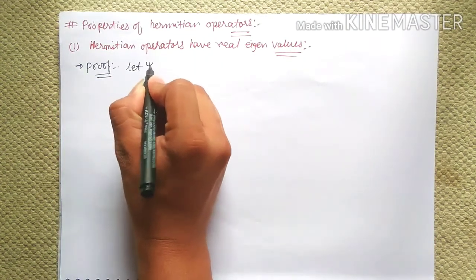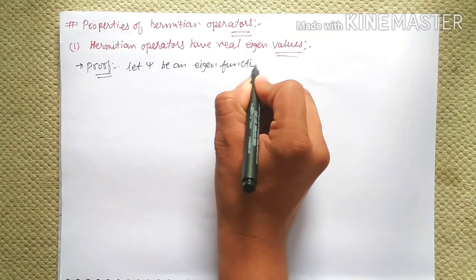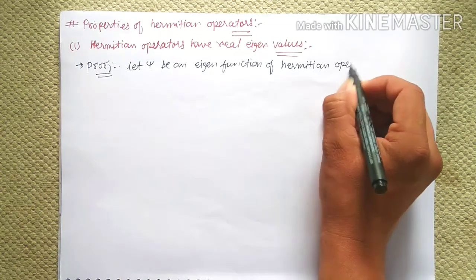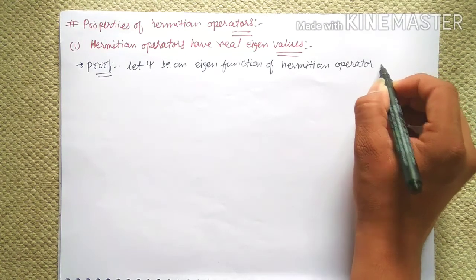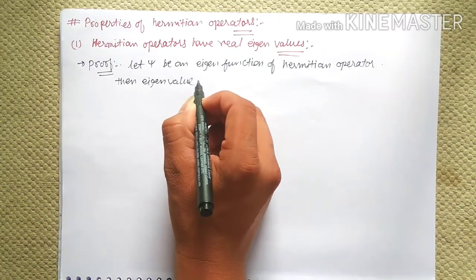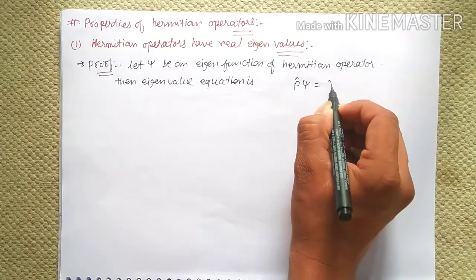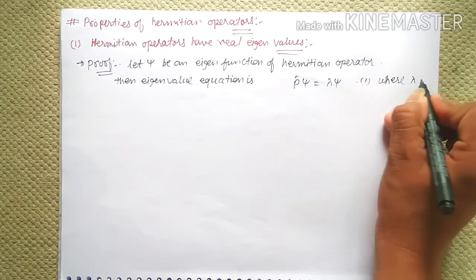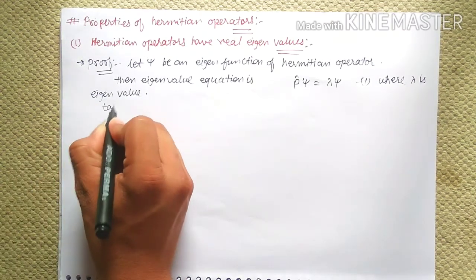Proof: Let psi be an eigenfunction of a Hermitian operator. Then the eigenvalue equation is P-hat psi equals lambda psi, equation one, where lambda is the eigenvalue.